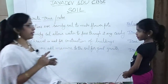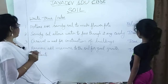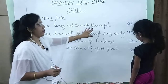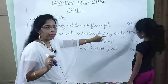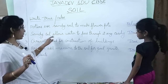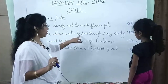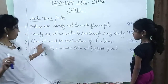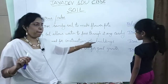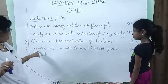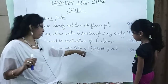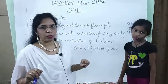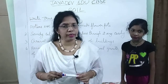Once again let's review: Potters use sandy soil to make flower pots — it is false; potters use clay. Sandy soil allows water to pass through it very easily — it is true. Gravel is used for construction of buildings — true. Farmers add manure to the soil for good growth of plants — it is true.